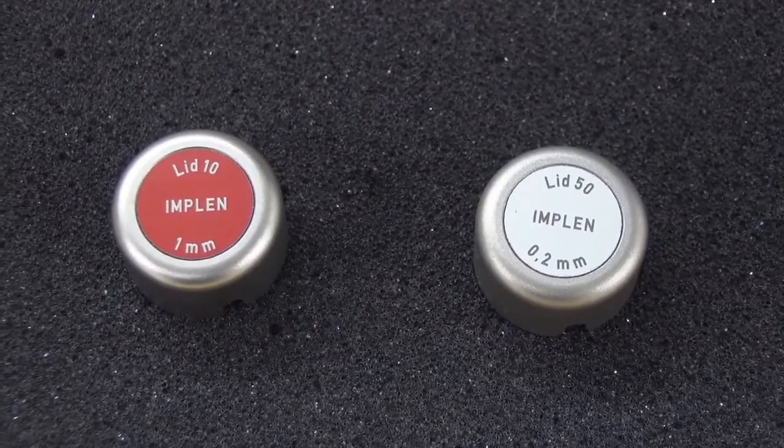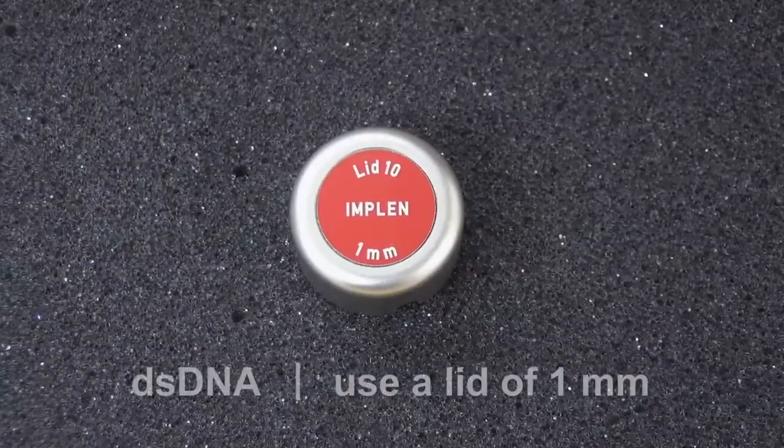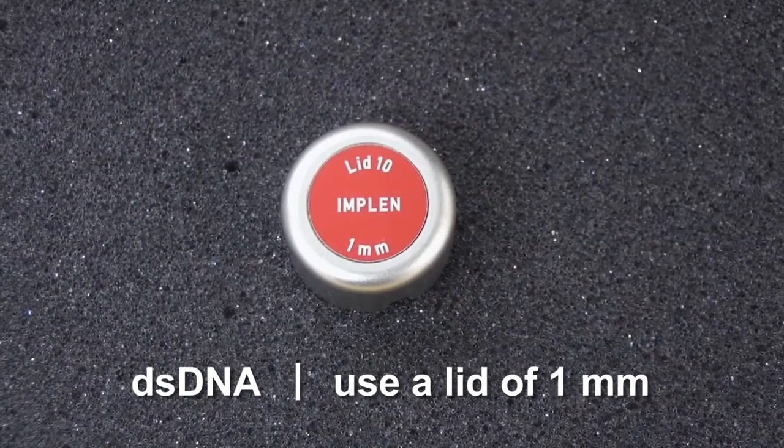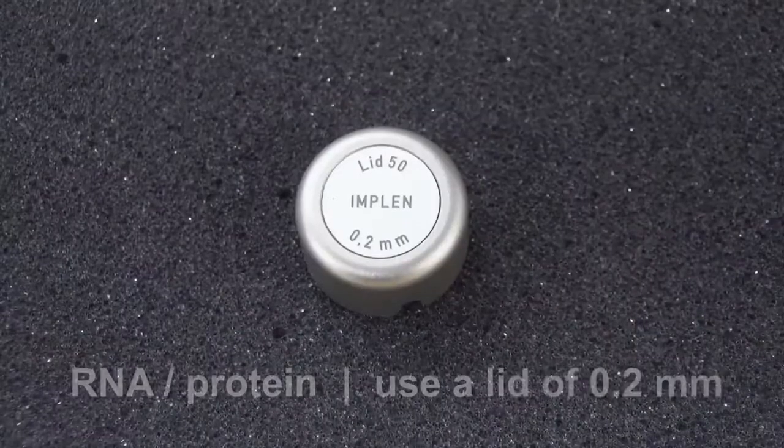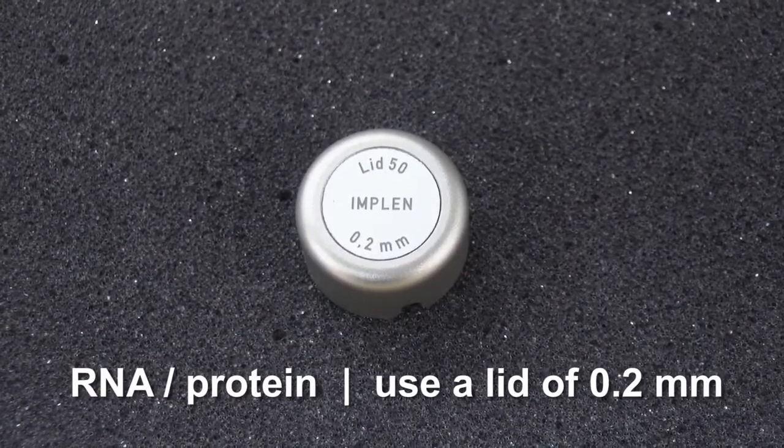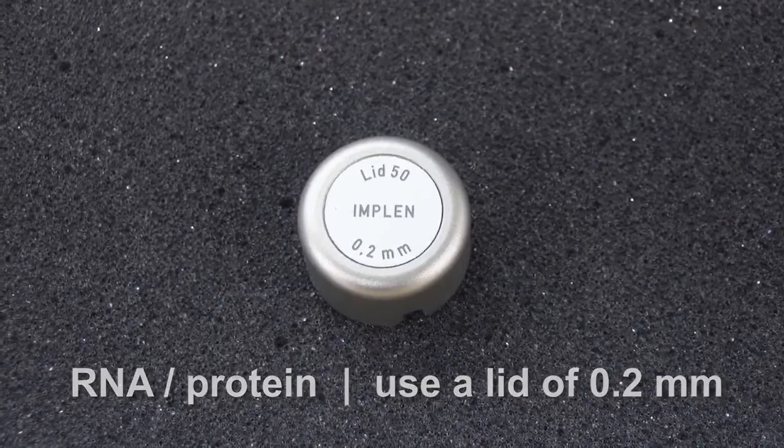4. Choose a proper lid based on the kind of sample. Use a lid of 1 mm path length for double-stranded DNA and use a lid of 0.2 mm path length for RNA or protein.